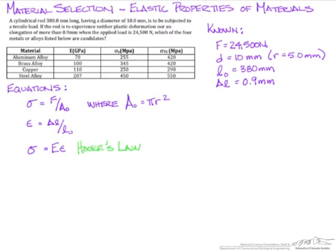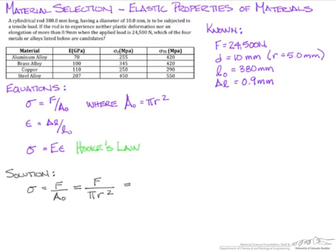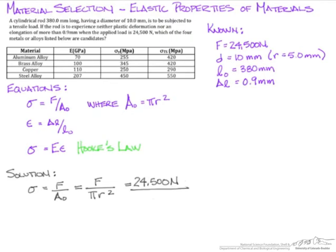The first step to solving this problem is to determine the applied stress that the rod is going to end up seeing with our applied load. We can do this using our engineering stress equation, so sigma equaling F over A0. Our force was given as 24,500 newtons, and our radius was given as 5 millimeters.